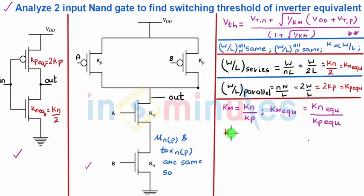So, we got AR equivalent equal to KN by 4KP.